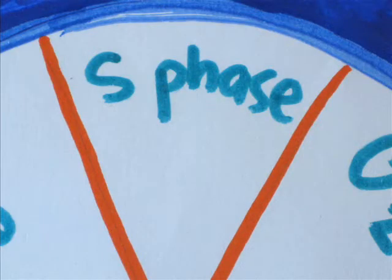S phase is next, also known as synthesis phase. This is when the cell duplicates its chromosomes, the structure that carries the DNA. Chromatin is the relaxed form of DNA, and it is found in the cell's nucleus.